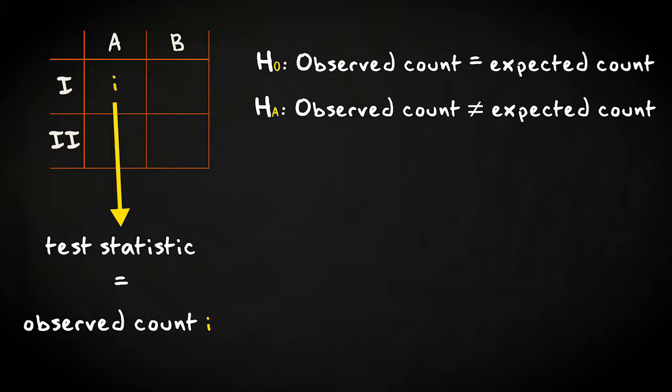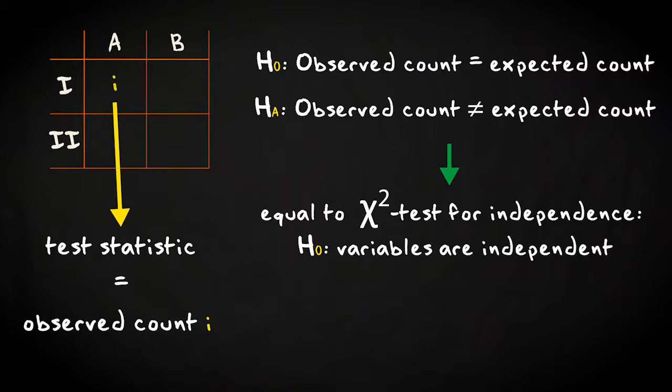When using a two-sided hypothesis, Fisher's Exact Test is equal to the chi-squared test for independence. And you could alternatively state as null hypothesis that the variables are independent.